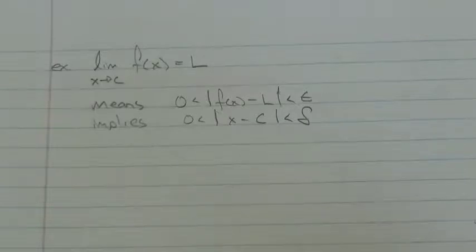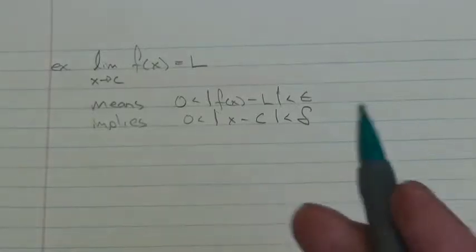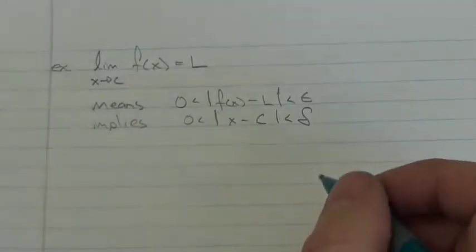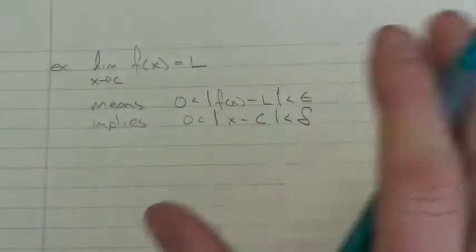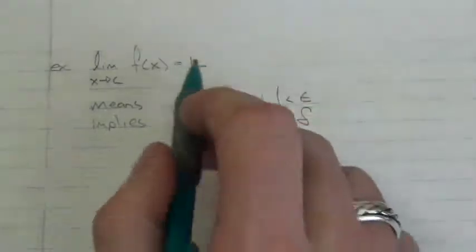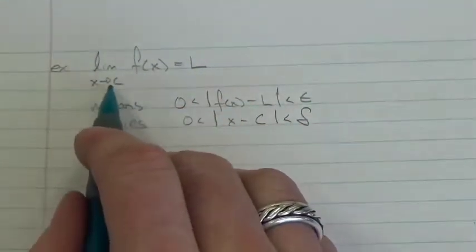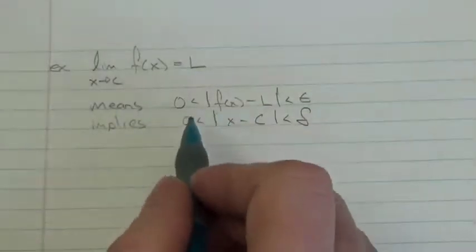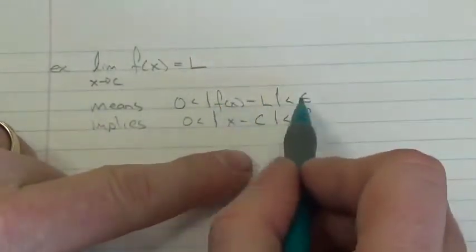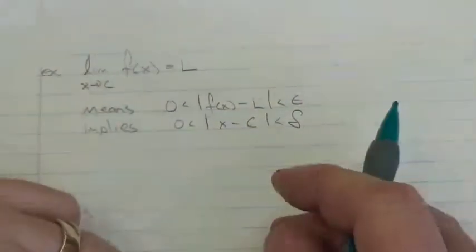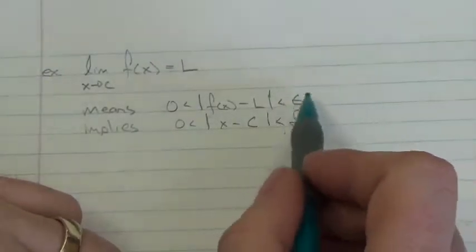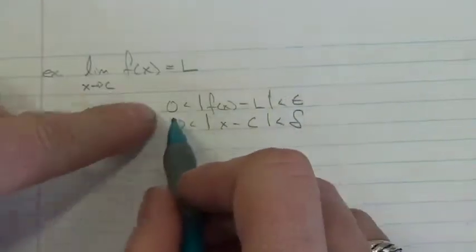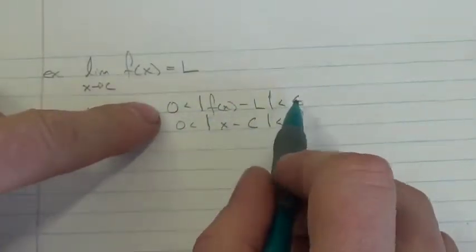Hi everybody. Let's take a look at a specific example of doing a limit using the epsilon-delta notation. We're going to look at just a linear function right now. Just to remember, when I say that the limit as X approaches C of f of X equals L, what I mean by that is that there's going to be this epsilon, this tolerance, that's greater than zero.